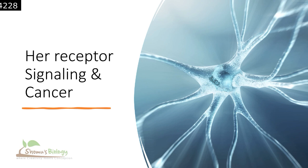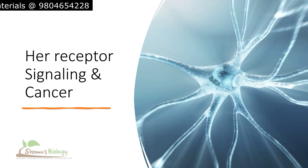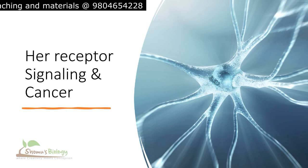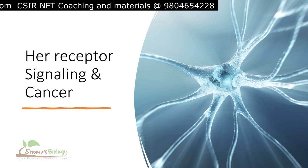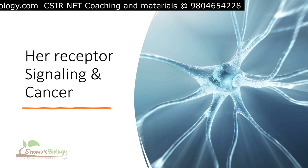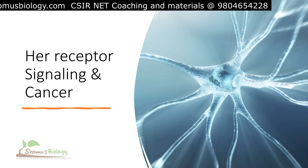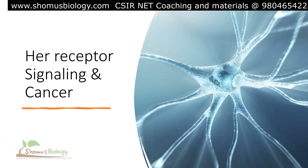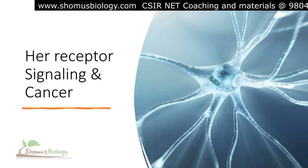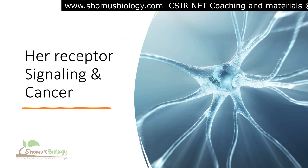Welcome to another video from Shomu's Biology. In this cell signaling lecture, we are going to talk about the HER receptor and cell signaling related to the HER receptor, which is linked to breast cancer. Herceptin is a monoclonal antibody that can prevent HER signaling, which generally leads to cell growth and proliferation and can cause breast cancer. We'll discuss the basics, components, and animation of HER receptor signaling and how herceptin prevents HER receptor activation.